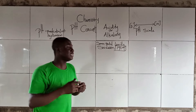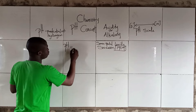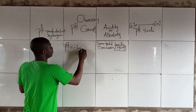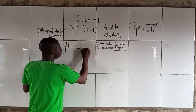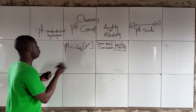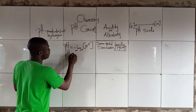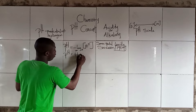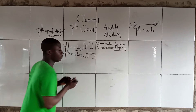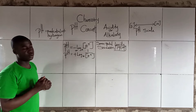Mathematically, pH is equal to negative log to the base 10 of hydrogen ion concentration. You can also write it as pH equals negative log to the base 10 of 1 over [H⁺]. You can use either of these equations.